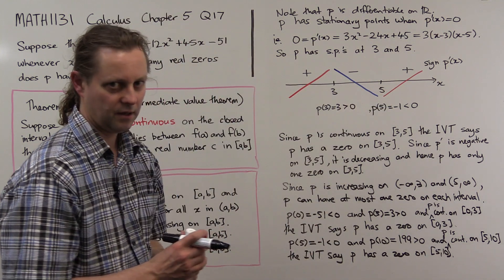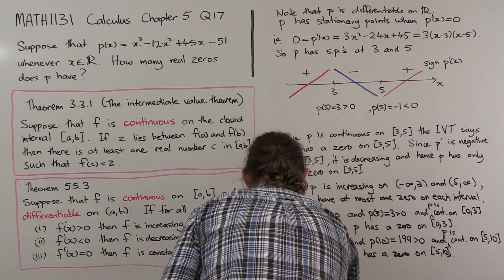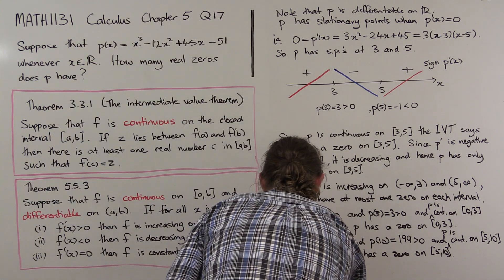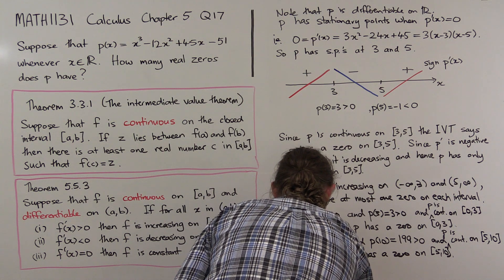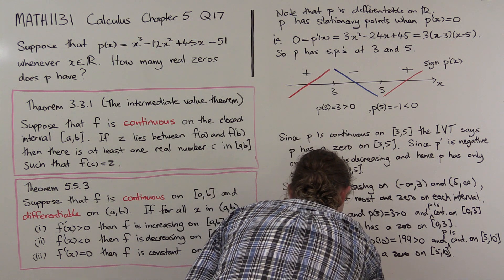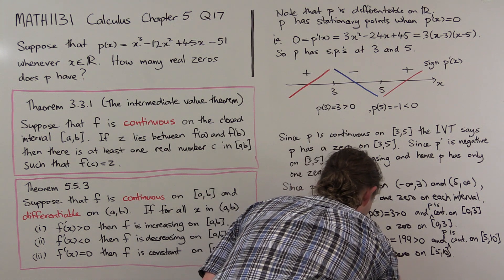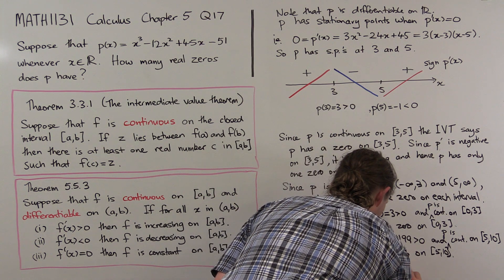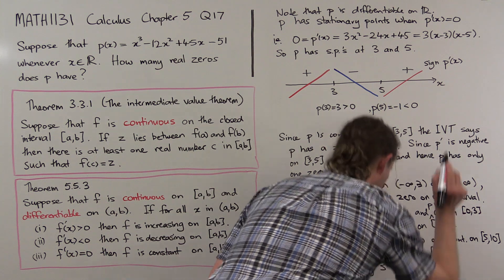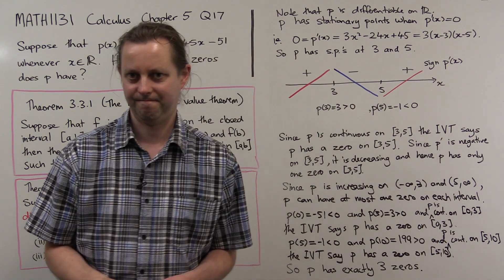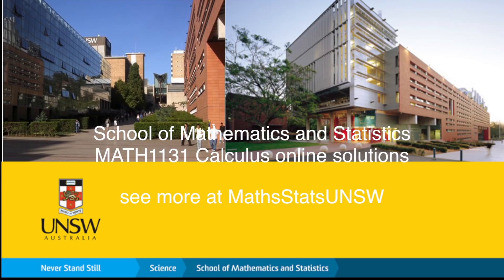All of that together tells us that P has exactly three zeros.